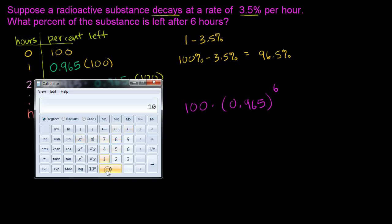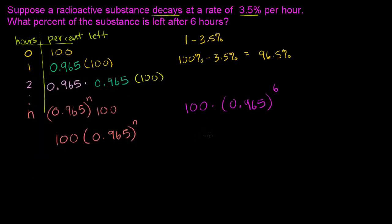So we have 100 times 0.965 to the sixth power, which is equal to 80.75. This is all in percentages. So it's 80.75% of our original substance.